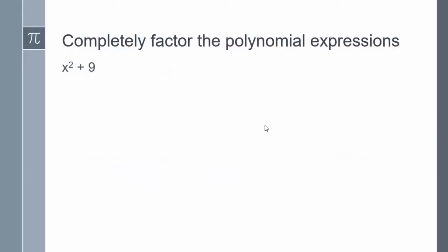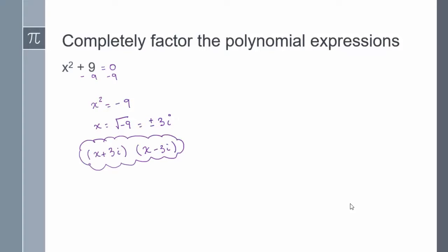Here is our first example. We are to completely factor the polynomial expression x squared plus 9. I find that the easiest way is to first solve for x squared and then write it in factored form. So I'll set it equal to 0 and isolate x squared by subtracting 9 on both sides, getting x squared equals negative 9. Taking the square root gives x equals plus or minus 3i. So in factored form, we have x plus 3i and x minus 3i.